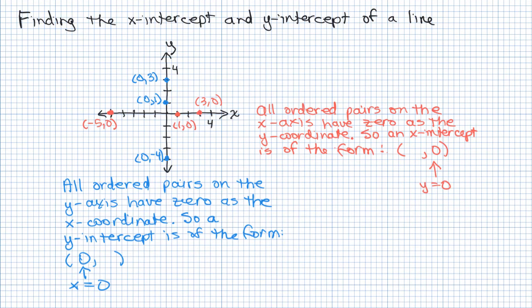All right, we're going to find out how to find the x and y intercepts of a line. So if you have a graph of a line, you can just look and see where the line crosses the x-axis, and that would be the x-intercept, and where it crosses the y-axis, and that would be the y-intercept, unless it's a vertical or horizontal line, in which case there might not be one of those.